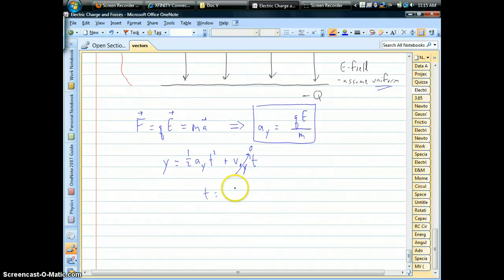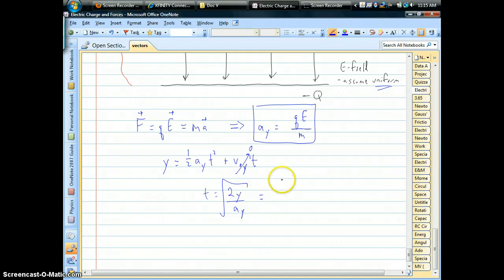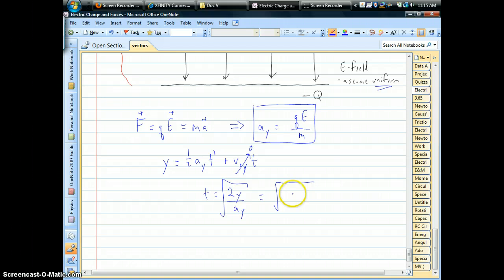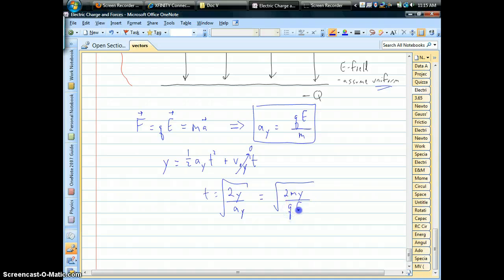So if we solve for time, it's going to be two times that distance divided by the acceleration, and then we have to square root that. So that's going to be equal to, if we substitute in our expression for the acceleration, two times mass times the Y distance, and that's all going to be over the charge times the electric field strength.